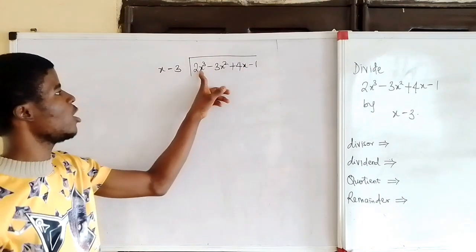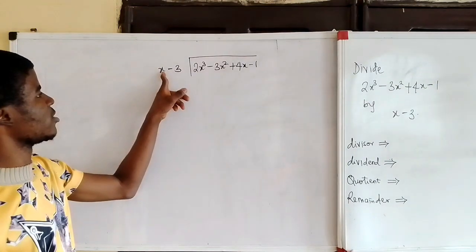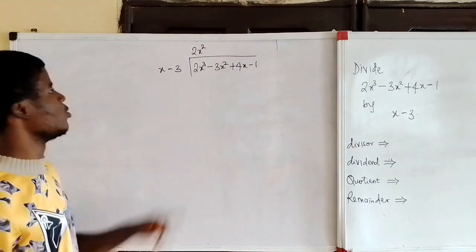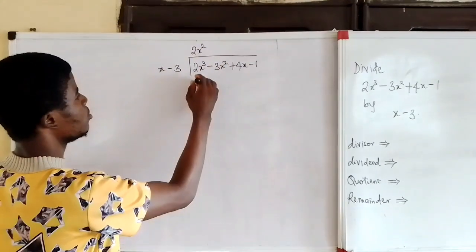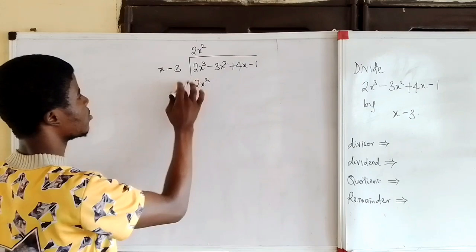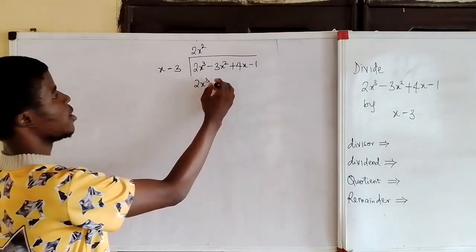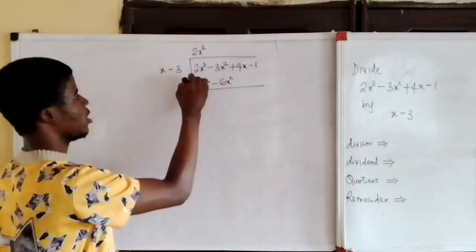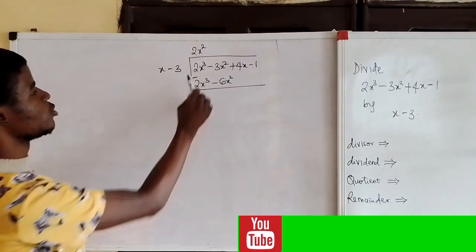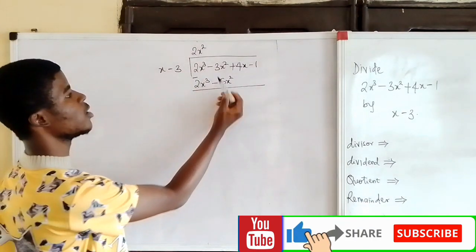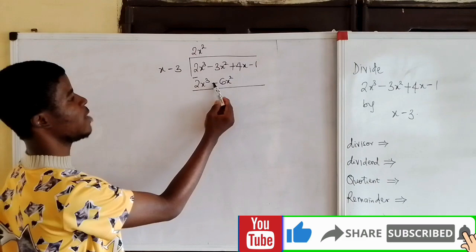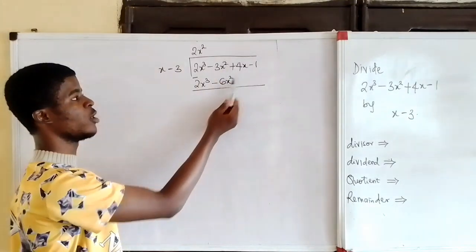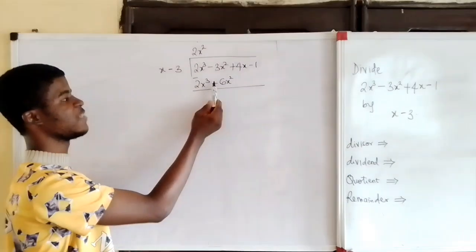The first term here, 2x cubed, will be divided by x to give us 2x squared. So x times 2x squared is 2x cubed. 2x cubed minus 3 times 2x squared is minus 6x squared. I will subtract. 2x cubed minus 2x cubed is 0. Minus 3x squared minus minus 6x squared is minus 3x squared plus 6x squared. That is, minus minus is plus.